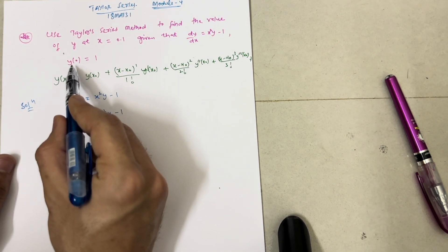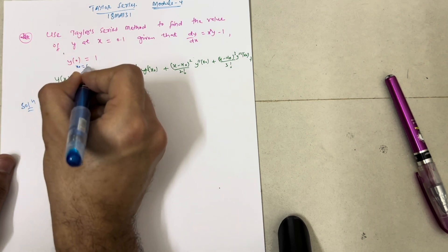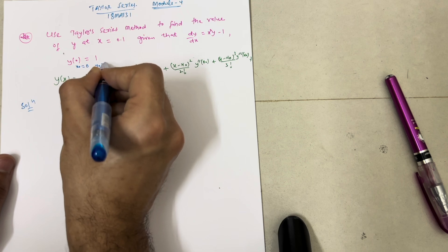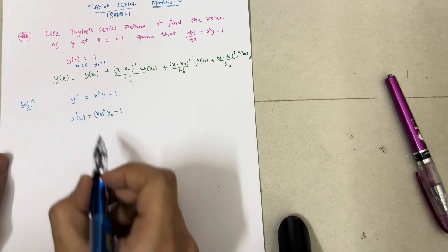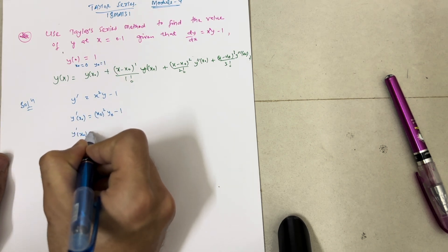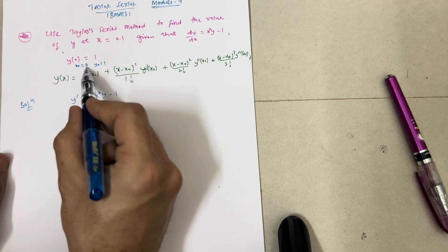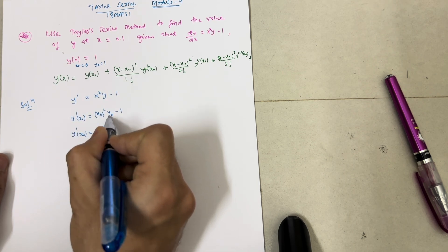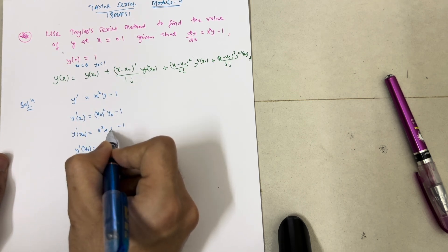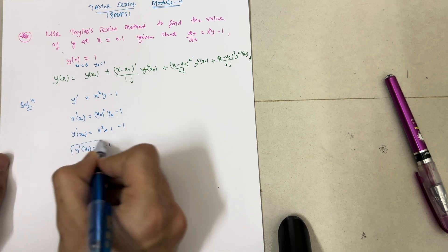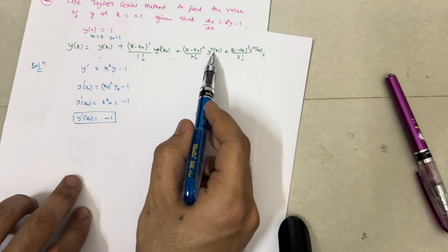What is the initial condition? It is y(0) = 1, where 0 is x₀. So x₀ = 0 and y₀ = 1. Now y'(x₀) = (0)² × 1 - 1 = 0 × 1 - 1 = 0 - 1. So we get y'(x₀) = -1.